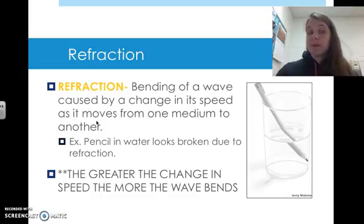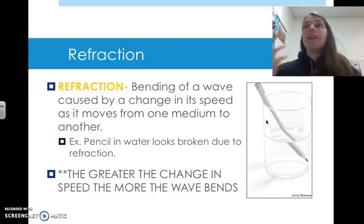Refraction is another thing that can happen to a wave. Refraction is the bending of a wave that's caused by the change in speed as it moves from one type of medium to another. So in other words, when you have a pencil in water, if you've ever noticed this when you were fishing or whatever, light is going to move at a specific speed and wavelength in the air. That's one type of medium.